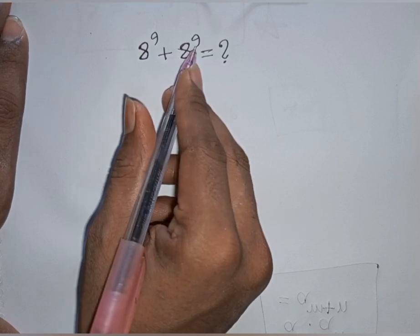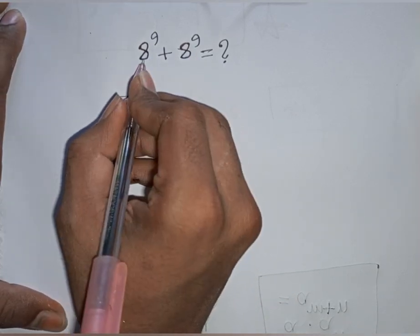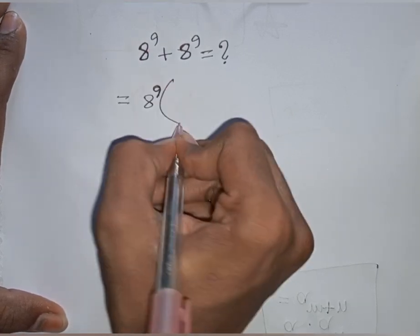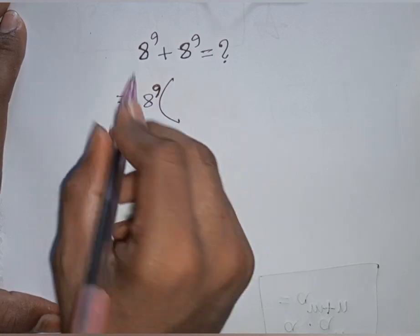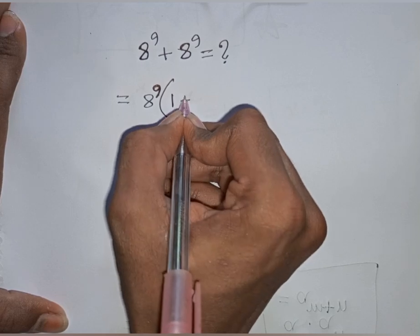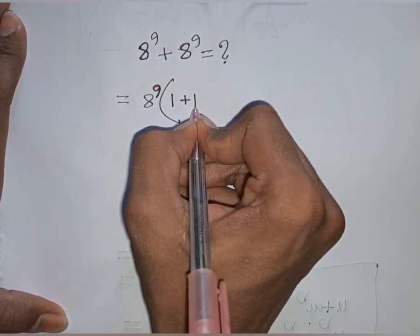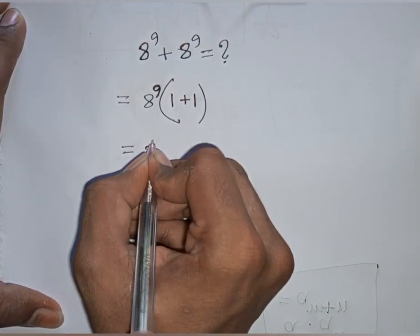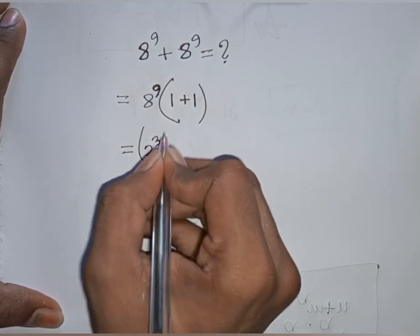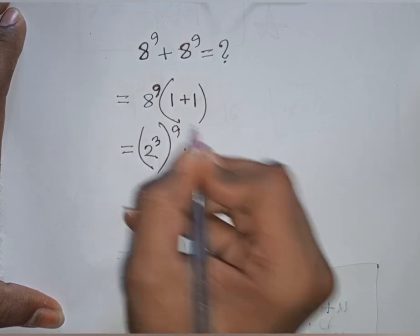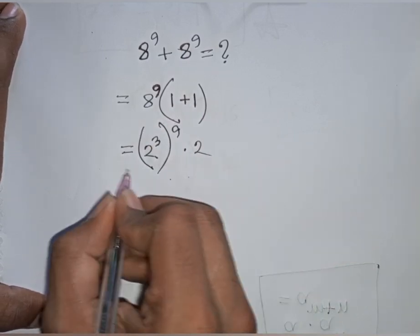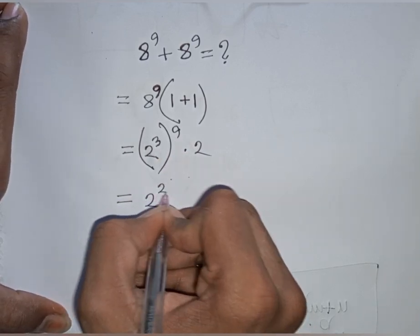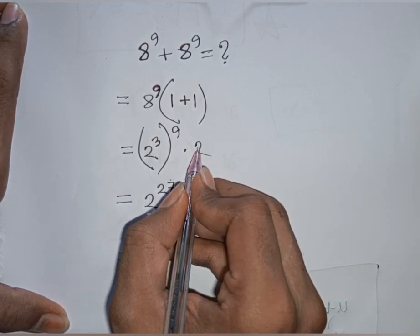Now let's simplify 8^9 plus 8^9. We take 8^9 as a common factor, giving 8^9 times (1 plus 1), which equals 8^9 times 2. Now 8^9 can be written as (2^3)^9, which equals 2^27, times 2 which is 2^1.